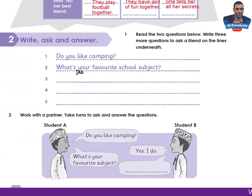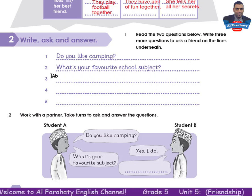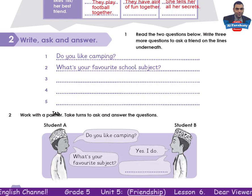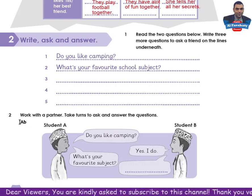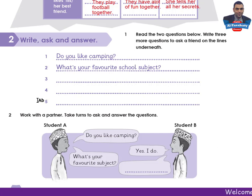Activity 2: Write, ask and answer. Read the two questions below and write three more questions to ask a friend on the lines underneath. The given questions are: 1. Do you like camping? 2. What's your favorite school subject? You are asked to write three more questions to ask your friend. Then work with a partner and take turns to ask and answer the questions, like: Student A — Do you like camping? Yes, I do. What's your favorite subject? And so on.